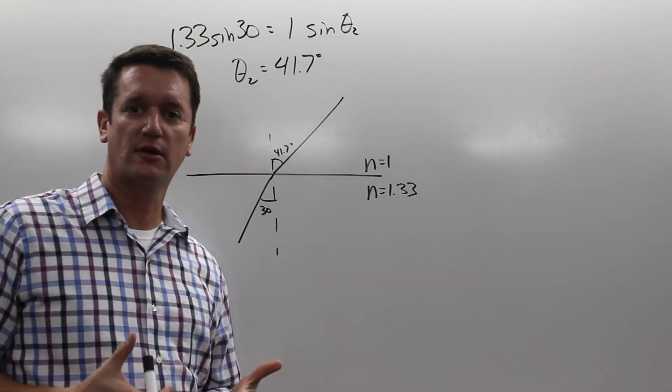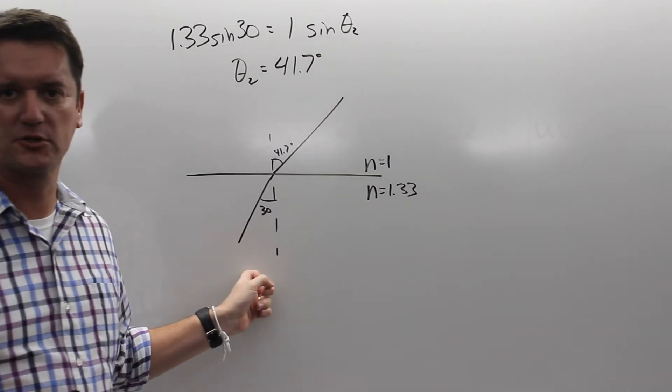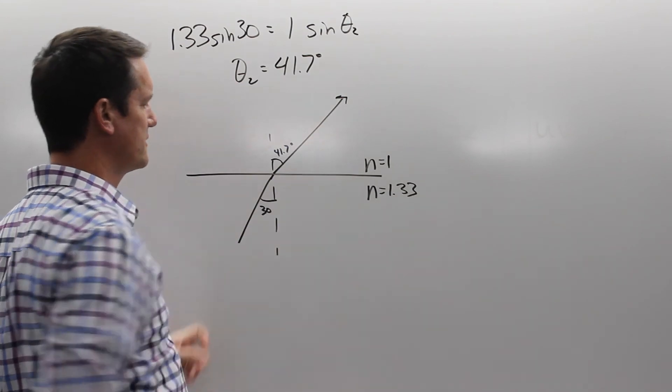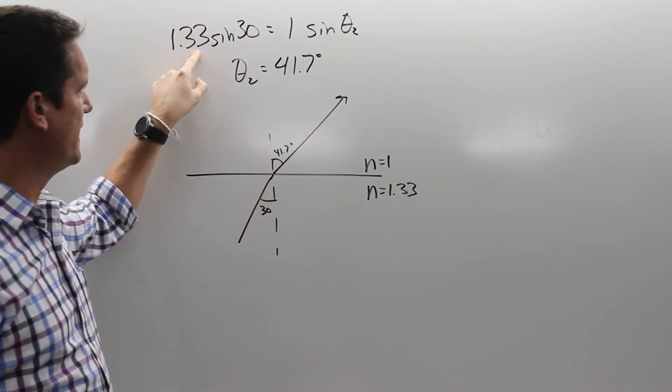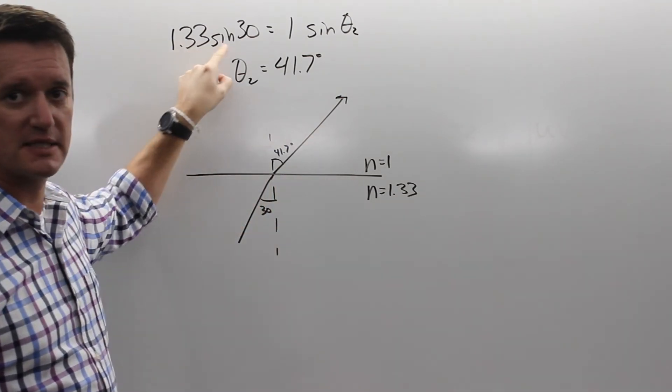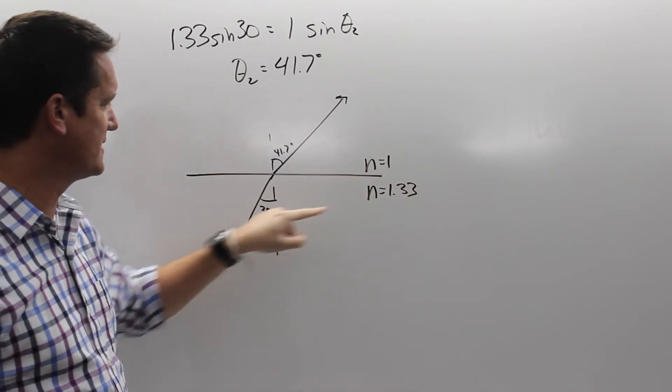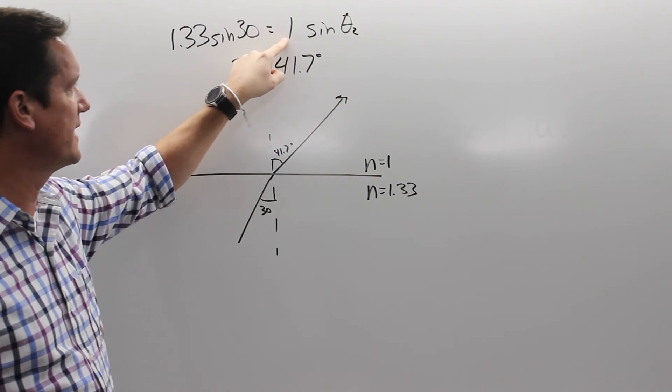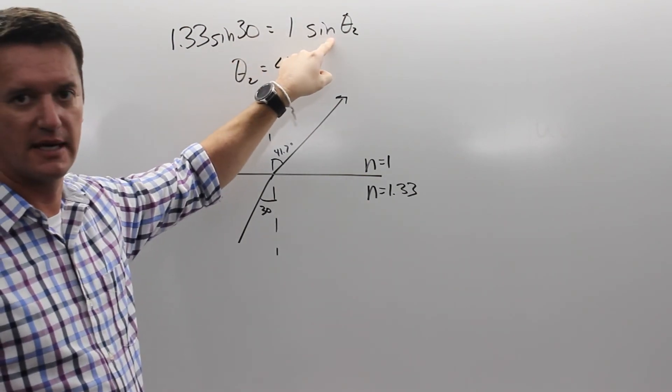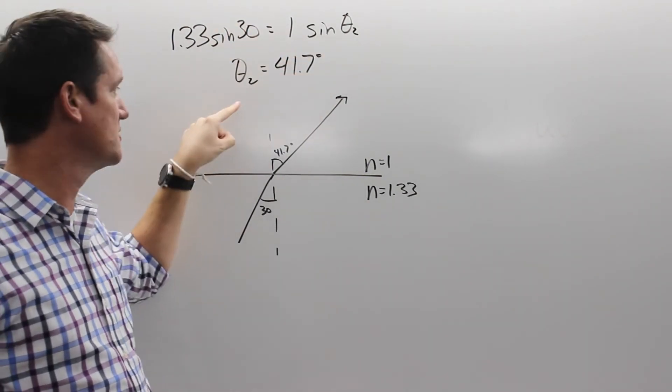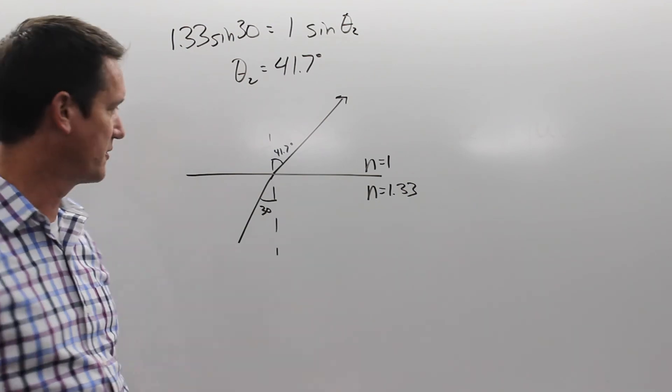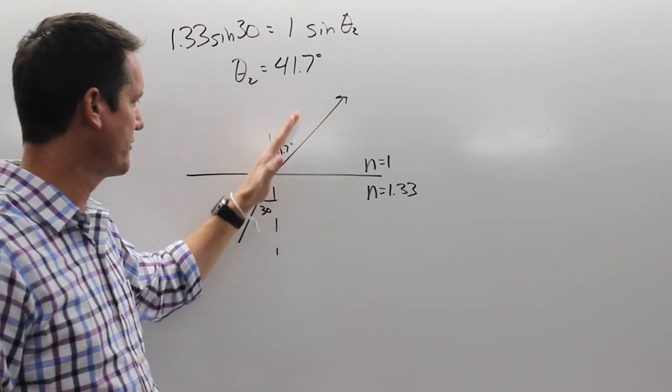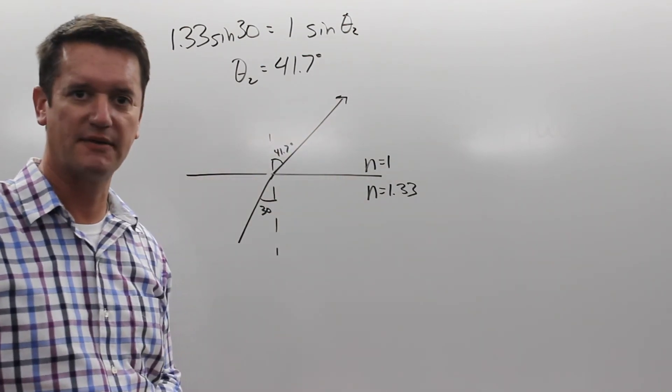Let's take a look at this. I redrew my picture because my 30 degree angle didn't look so good. So what I have here is 30 degrees going in. 1.33 times the sine of 30, that's N1 sine theta 1, is going to equal N2 sine theta 2. So N2 is 1 times the sine of theta 2. I solved that for theta 2 and I got 41.7 degrees, which is a little bit bent away from the normal. So it started in at 30, came out at 41.7.